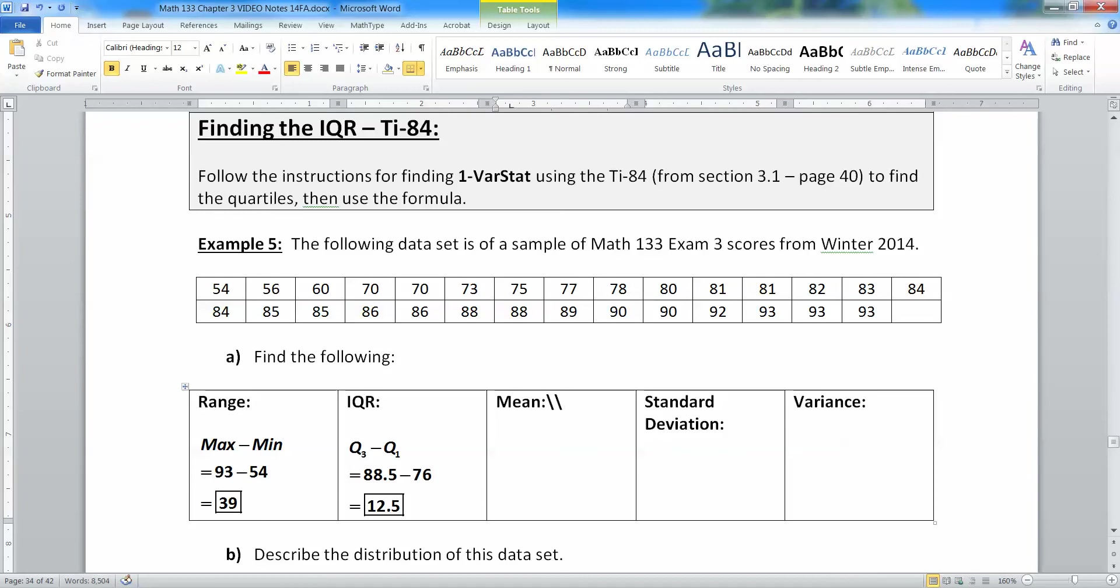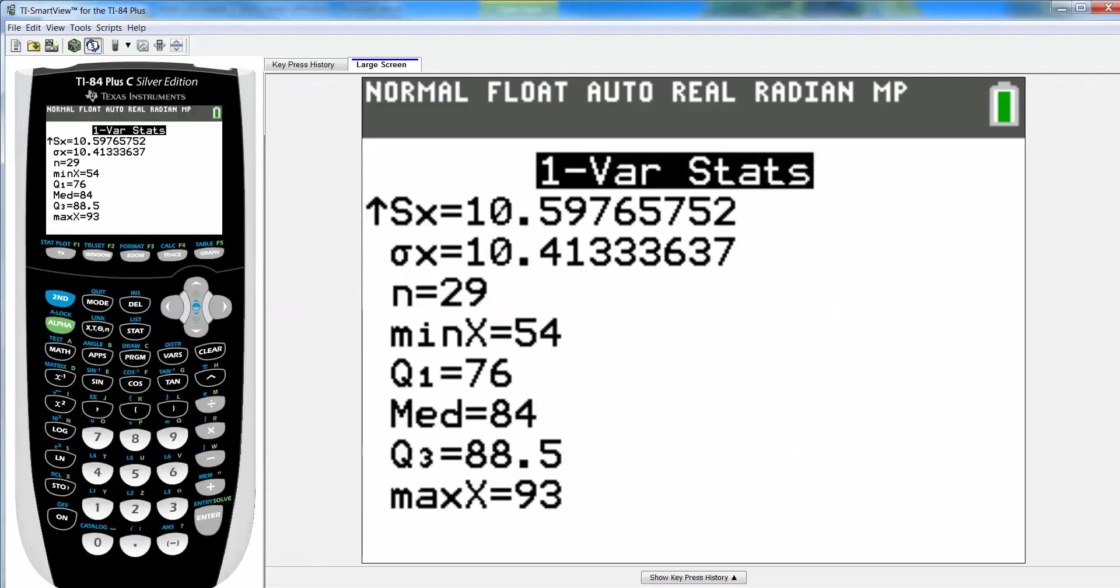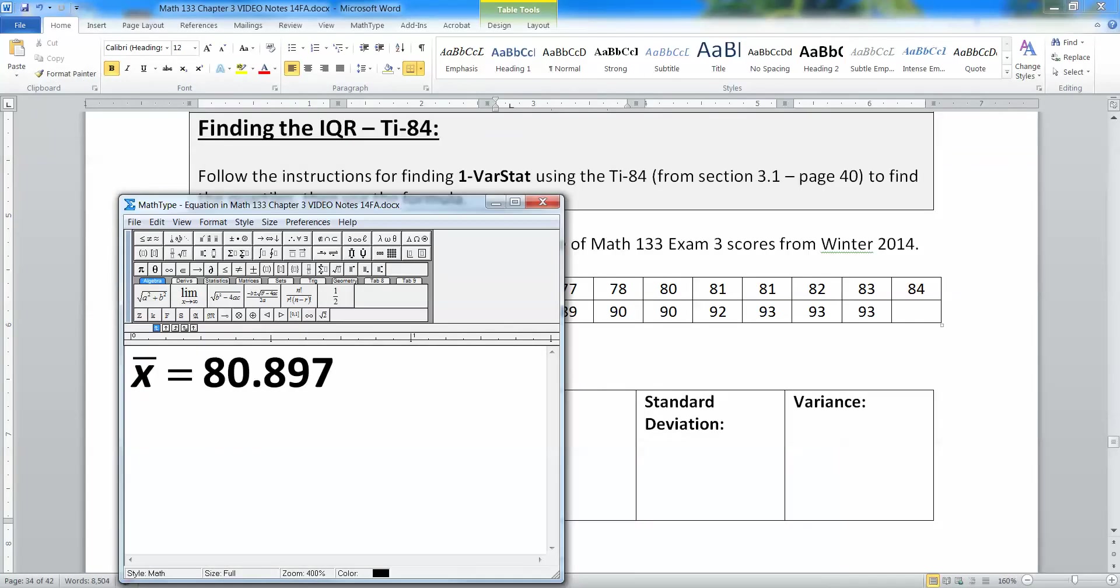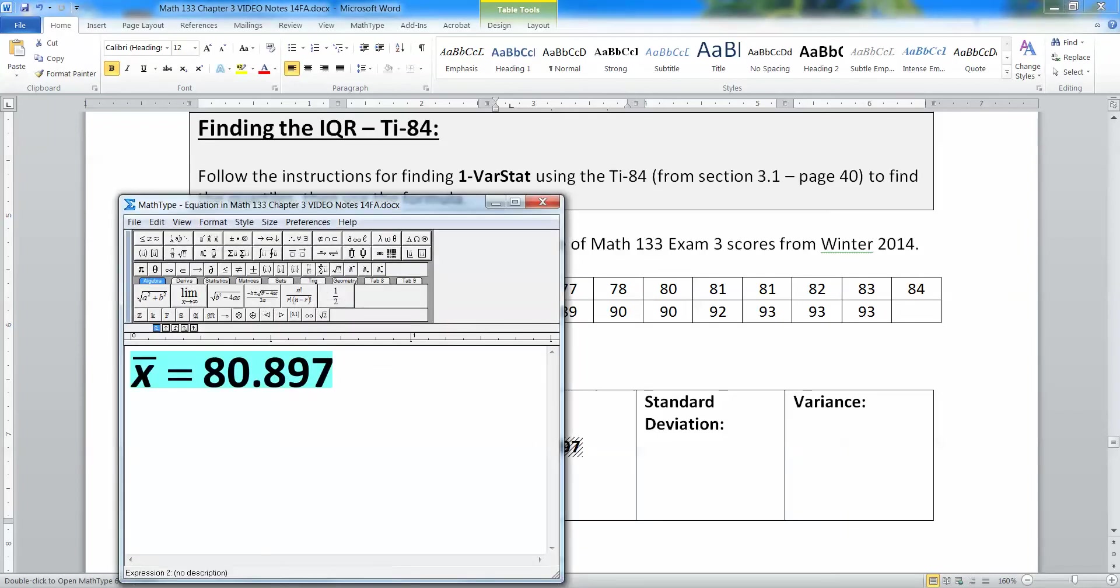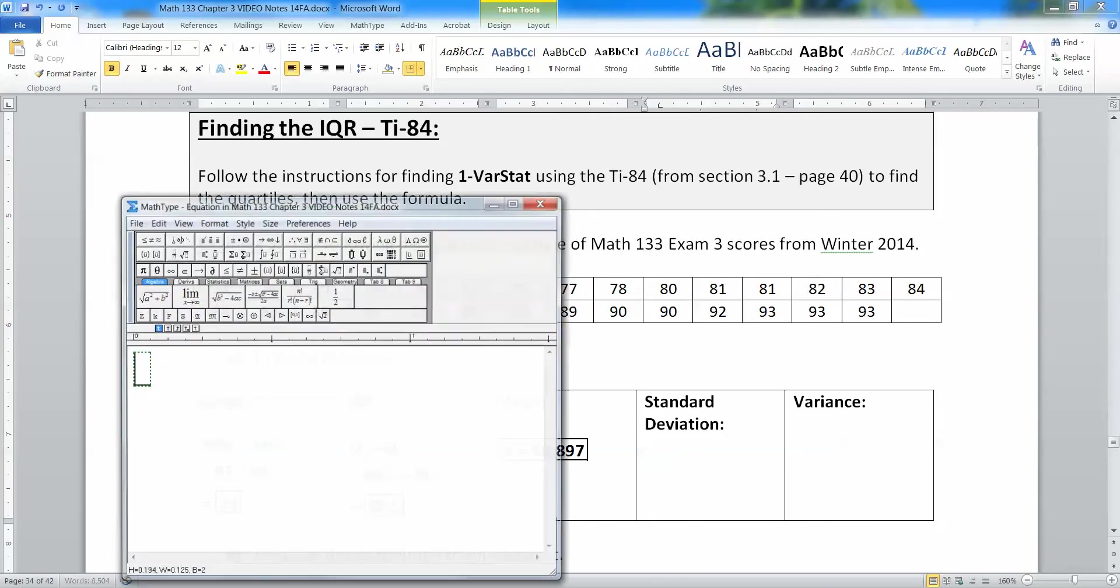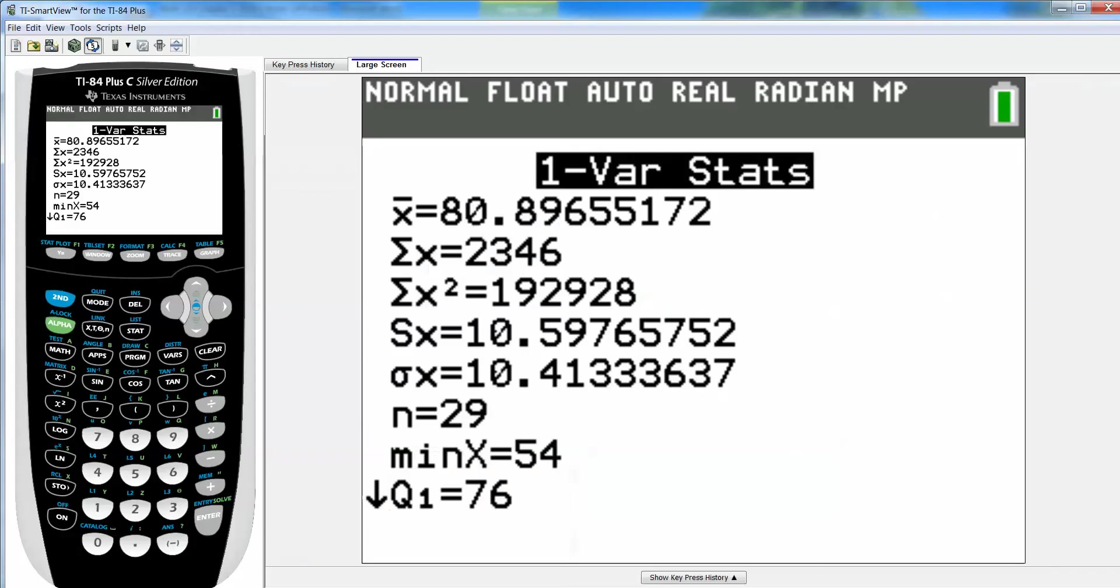All right, now the mean we already saw from earlier, but for our own benefit, that would be X bar, because it said it was from a sample of student test scores. And that was up at the top, 80.897. And then we need the standard deviation. That's S. Because, again, this is a sample, so we should go with the sample standard deviation, which in this case was 10.598.